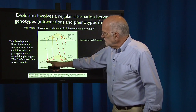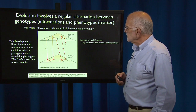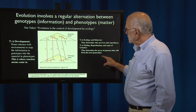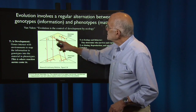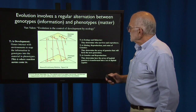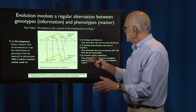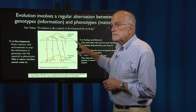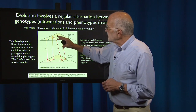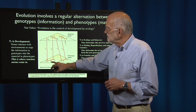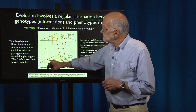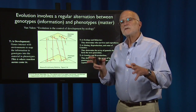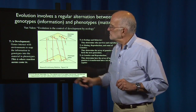T2 is ecology and behavior — that determines who survives and reproduces. T3 is mating, reproduction, and population genetics, which determines the array of gametes forming the next generation. T4 is genetics and reproduction, determining how the array of haploid gametes is transcribed into diploid zygotes. This is going on in every generation. Evolution operates in both genotype and phenotype space; selection acts on phenotypes, and development is intimately built into the apparatus of microevolution.